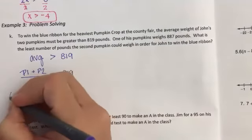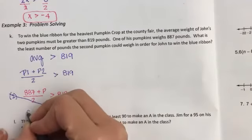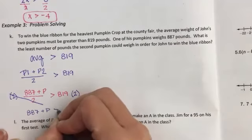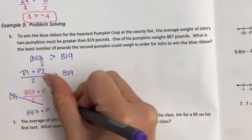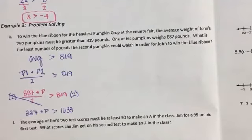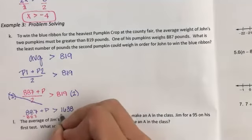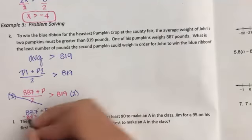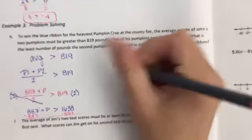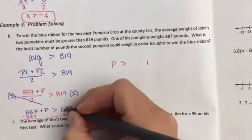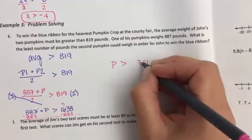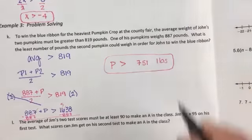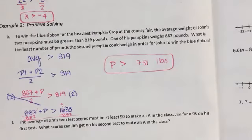The first thing that we would do is multiply by the two. I'd get 887 plus P has to be greater than, and if I doubled 820, I'd get 1640. So this should be 1638. Then my last step is just subtracting that 887. I would get P has to be greater than 751 pounds. It has to be greater than 751. Any questions on how I did that?